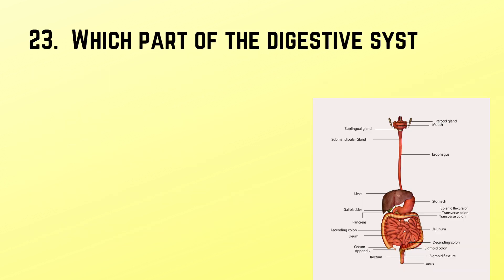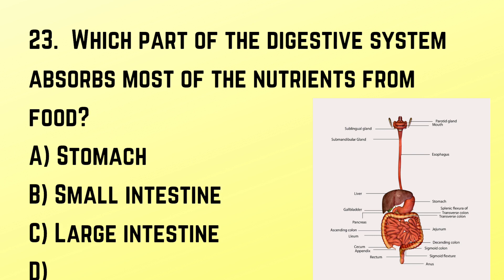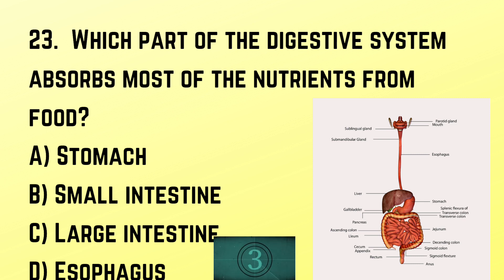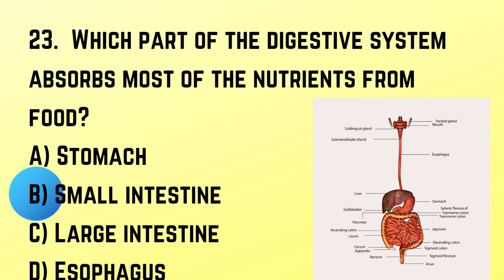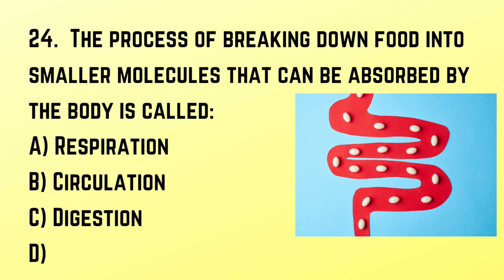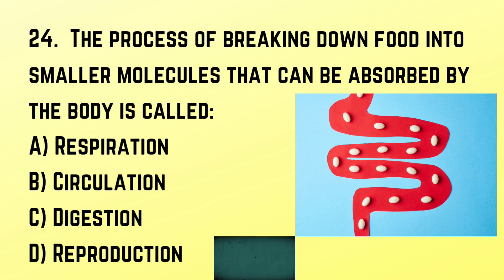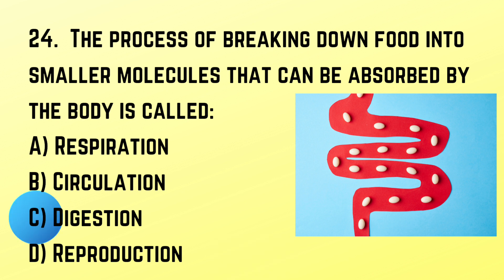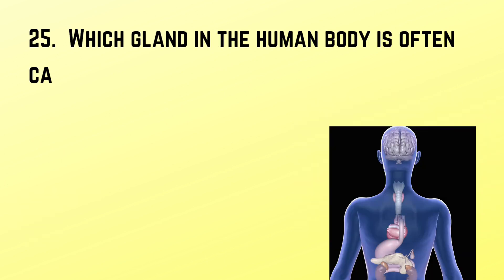Question number 23: Which part of the digestive system absorbs most of the nutrients from food? Correct answer: B. Small intestine. Question number 24: The process of breaking down food into smaller molecules that can be absorbed by the body is called? Correct answer: C. Digestion.